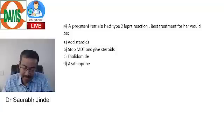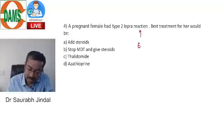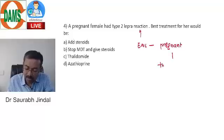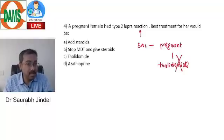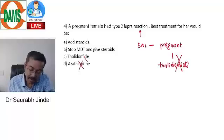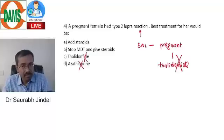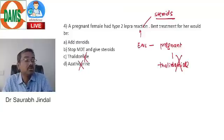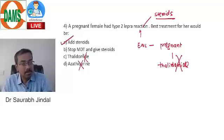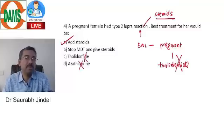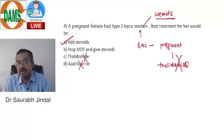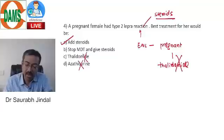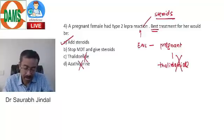Next: a pregnant female with type 2 lepra reaction (ENL). Thalidomide is absolutely contraindicated in pregnancy — never give it even to someone potentially pregnant. Azathioprine is also contraindicated. The correct treatment is steroids, which are the drug of choice for ENL. Crucially, MDT must not be stopped — continue MDT and simply add steroids, as MDT continues to kill the organism.